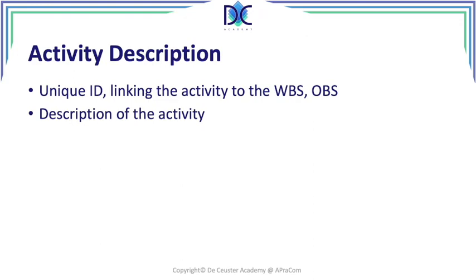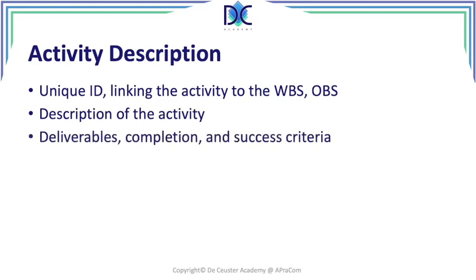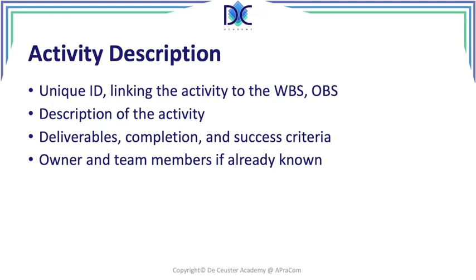There is a description of the activity. We identify the deliverables. Completion and success criteria are very important — we have to know when an activity is completed and when it is successfully completed. We can add the owner and the team member if already known, or specify what type of person is needed, including any specific certifications required to work on the activity. We can also identify the duration and the cost.